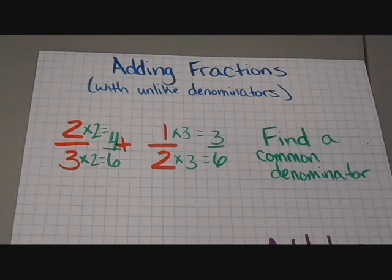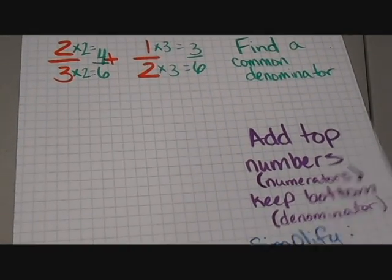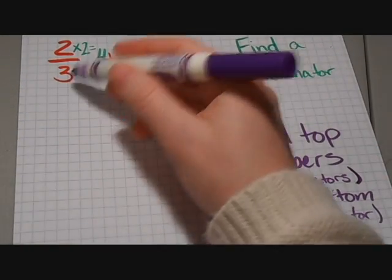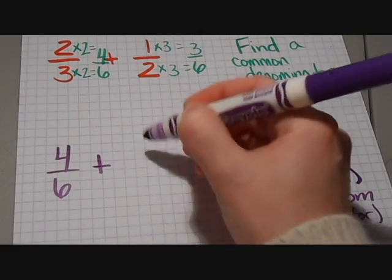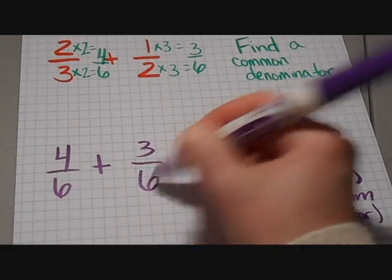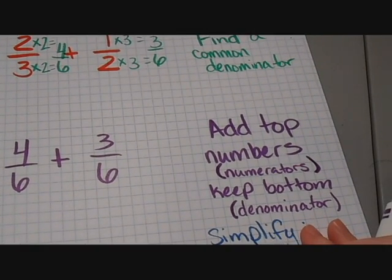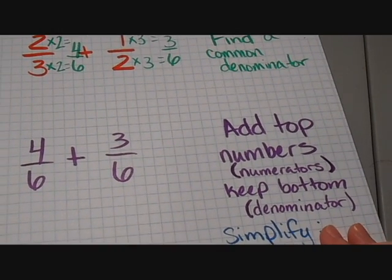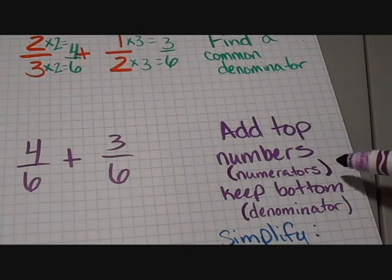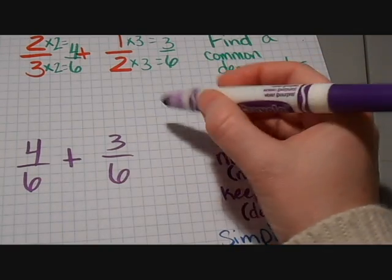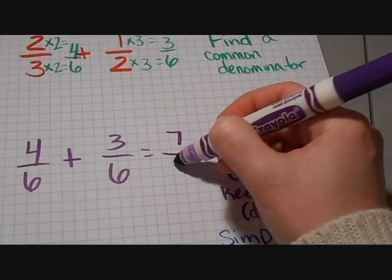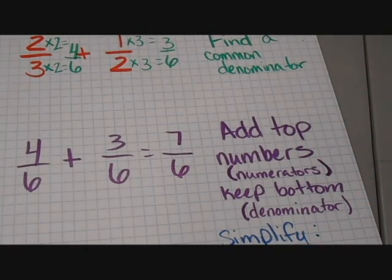I'm just going to rewrite those fractions down here for my second step. So now instead of 2/3 plus 1/2, I've got 4/6 plus 3/6. So for my second step, I just need to simply add the top numbers, the numerators. And then I keep the bottom number, the denominator. So 4 plus 3, that equals 7. And then I keep my denominator, which is 6.